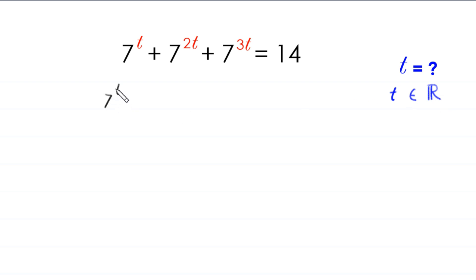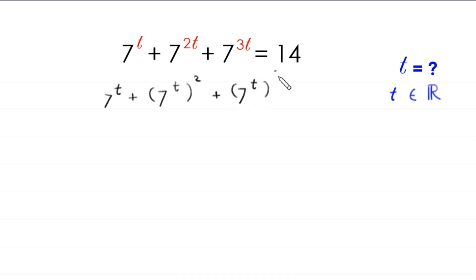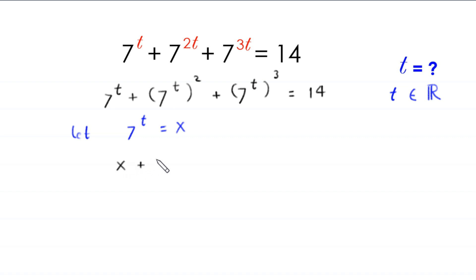7 to the power t plus 7 to the power 2t can be written as 7 to the power t whole squared, plus 7 to the power 3t can be written as 7 to the power t whole cubed, is equal to 14. So we suppose that 7 to the power t is equal to x. So this equation will become x plus x squared plus x cubed is equal to 14.